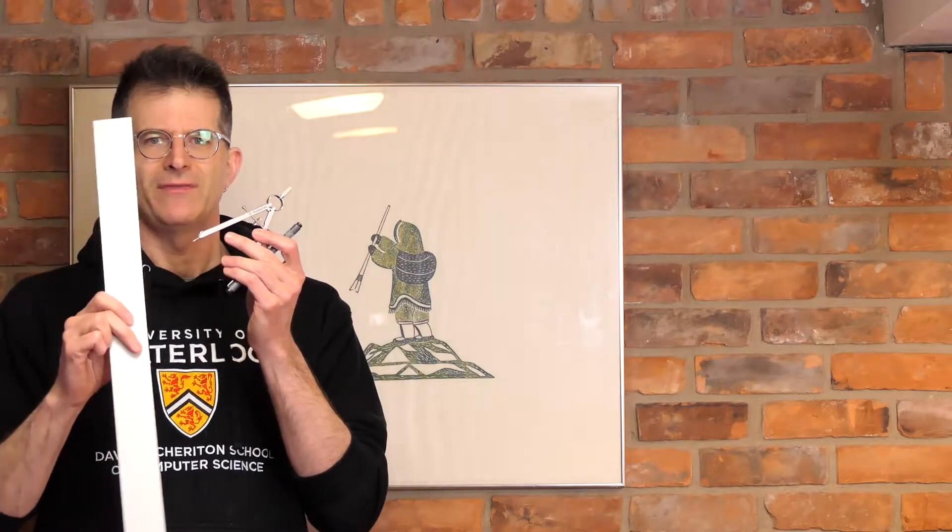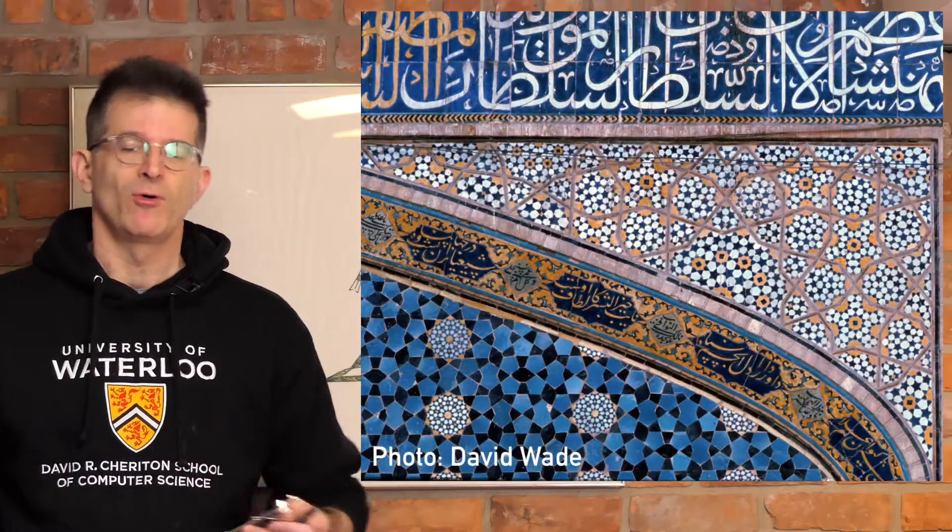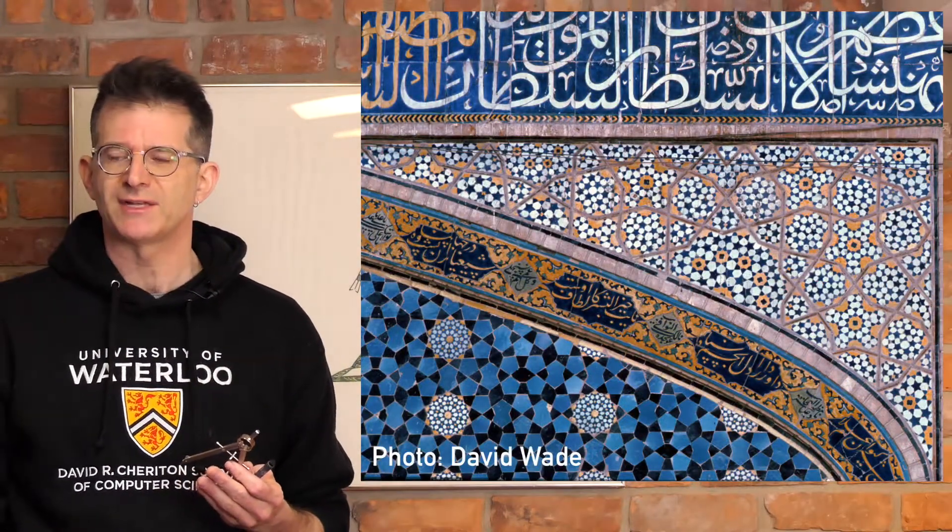I'm going to show you how to draw a pentagon using two ancient geometric tools, the compass and the straight edge. My research interests have a lot to do with intersections between mathematics and art. One place where mathematics and art meet is in the construction of traditional Islamic geometric patterns. And in fact, a lot of those traditional patterns have pentagons in them or shapes that are derived from pentagons.